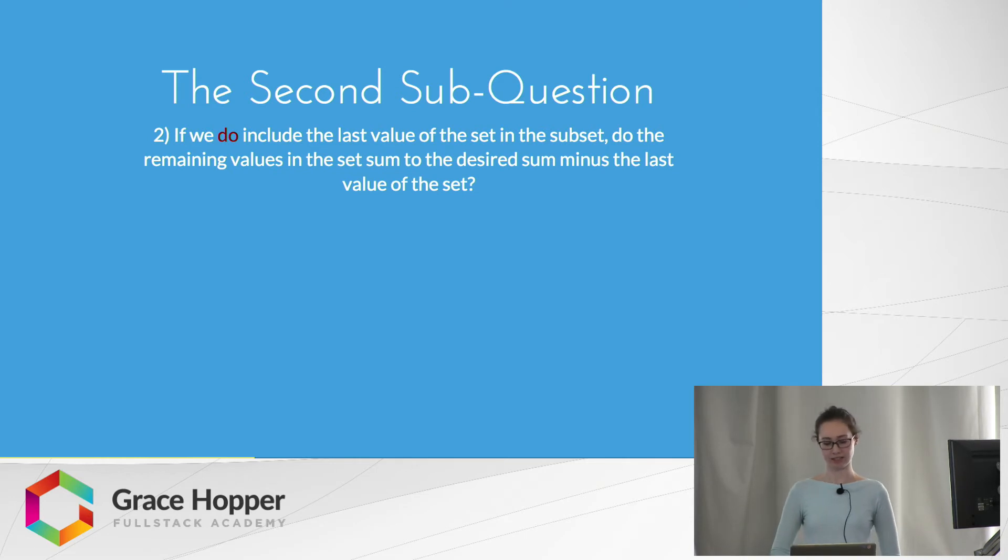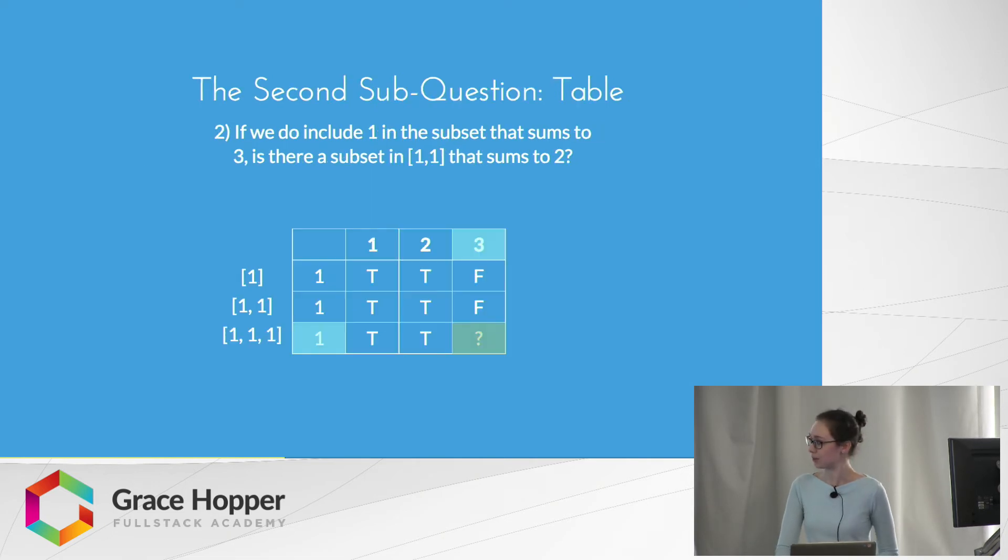The second question we can ask is if we do include the last value of the set in the subset. I will go through a little example here. If our set is {1, 1, 1} and our sum is 3, one possibility is that we do include that last one in the set. So there it is in our subset, and our remaining values that we can work with are {1, 1}. We know that within those values, there needs to be a subset that sums to 2, because we already have a value of 1 in our subset. We know that yes, this is true, because {1, 1} has a way to sum to 2. So then we have a subset of {1, 1, 1}.